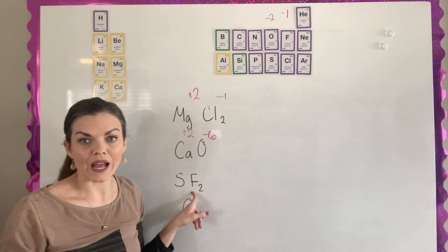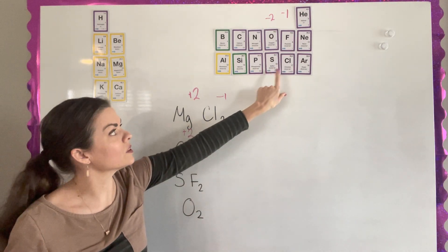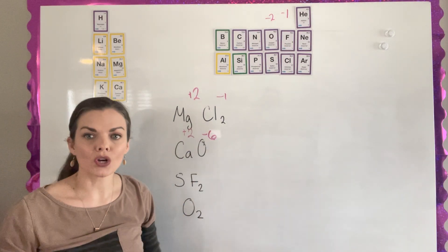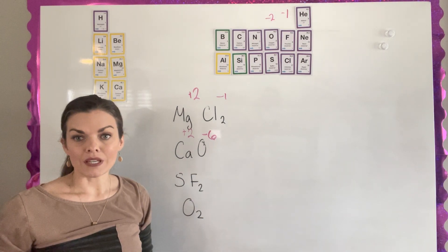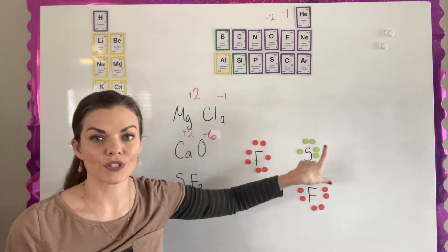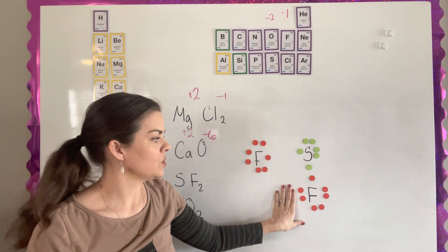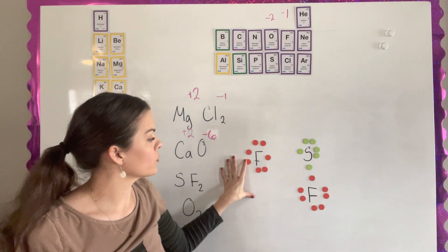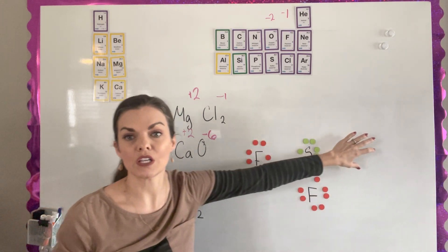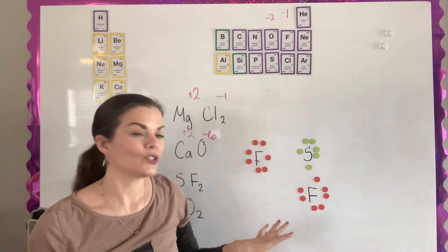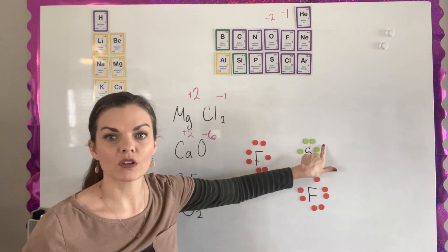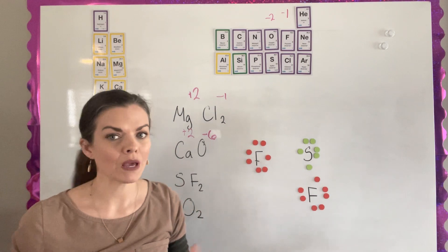For sulfur difluoride, I actually have two non-metals — they're both on the non-metal side of the periodic table — so I do not have an ionic compound and cannot use the charges as the oxidation state. To figure this out: sulfur has six valence electrons (shown in green), and two fluorines each have seven valence electrons (shown in red). Even though some put fluorine on each side of sulfur for high school chemistry, because of the extra lone pairs, it actually makes a bent shape.